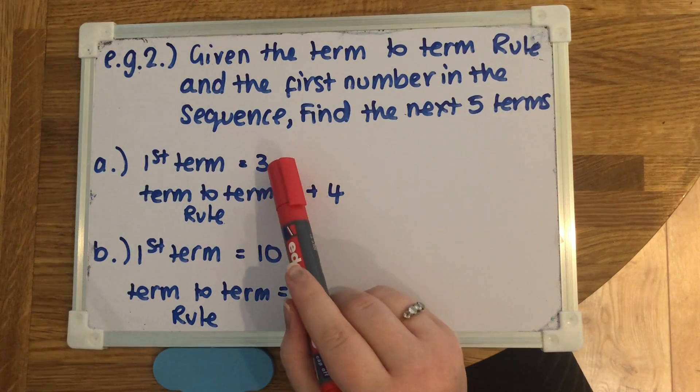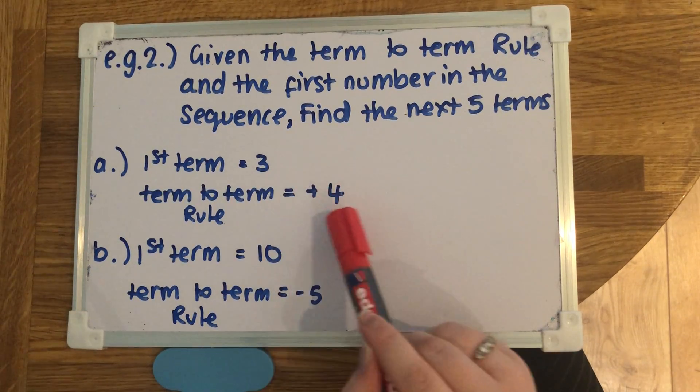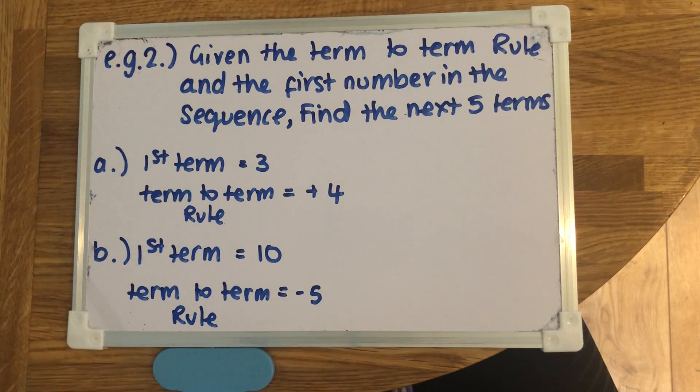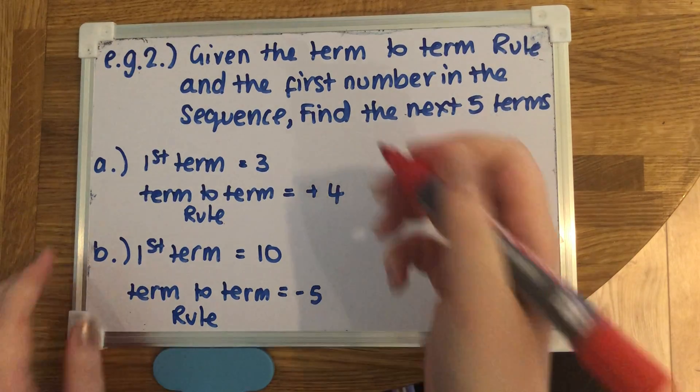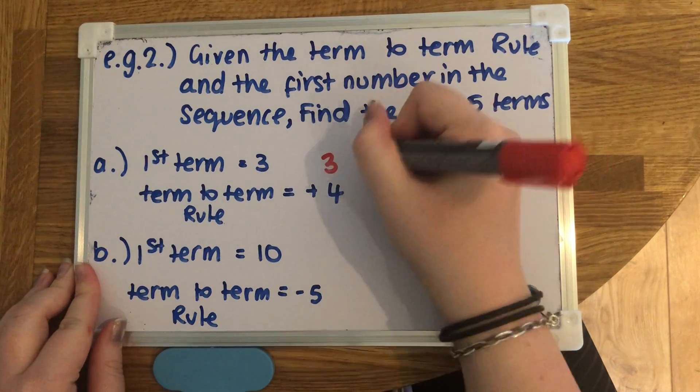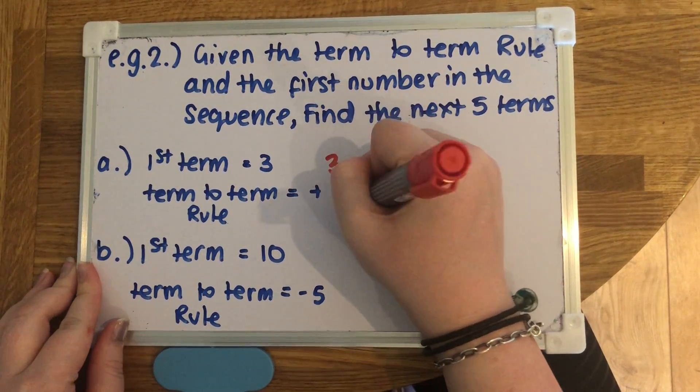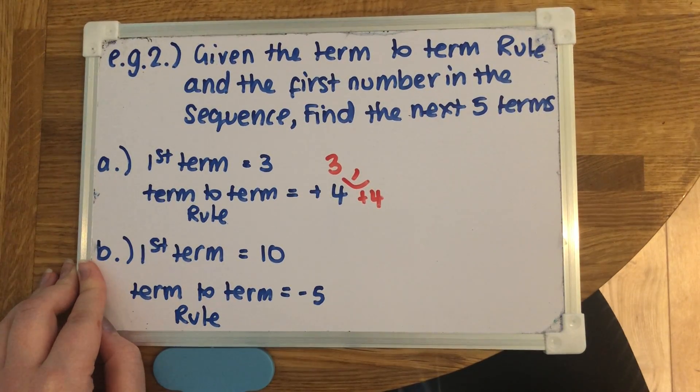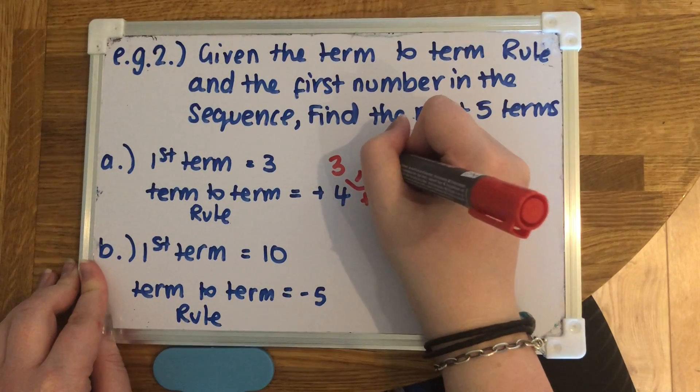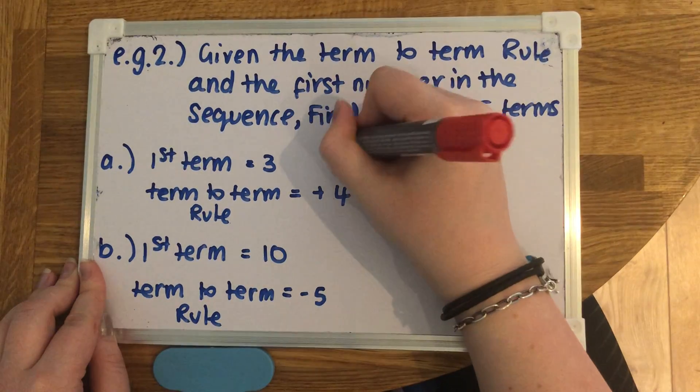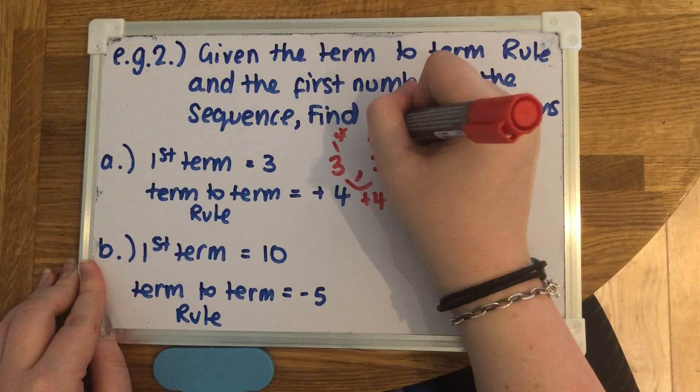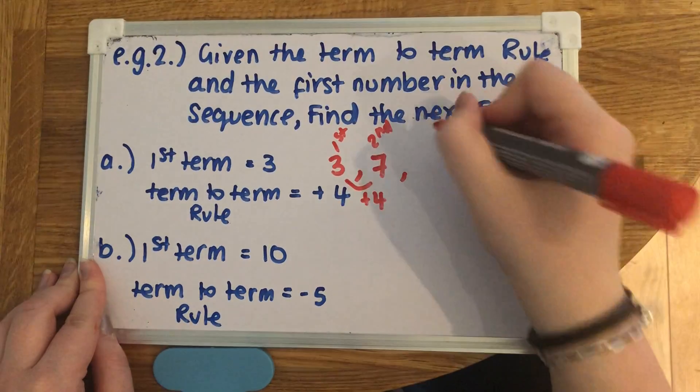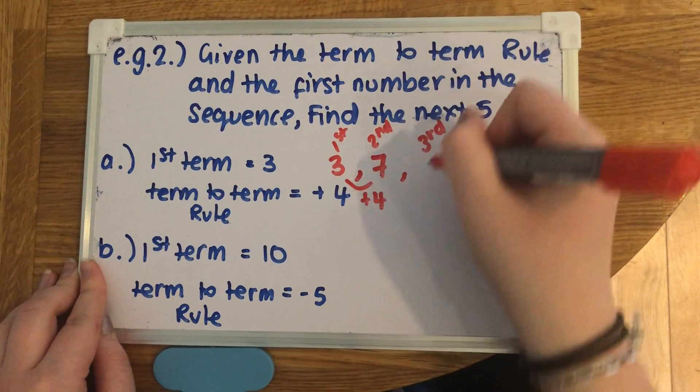If we start with a, we know the first one is 3 and we know that each time we're going to be adding 4 onto it. So we start with 3. If we add 4 onto 3, that's going to give us the next number in the sequence. So 3 add 4 would give us 7. So that's the first, this is the second.